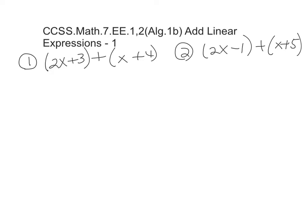So number one is 2x plus 3 plus x plus 4. And 2x plus 3 is in a group, and so is x plus 4. And so you need to combine like terms.